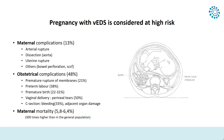For obstetricians and physicians, pregnancy with vascular EDS is a high-risk pregnancy, secondary to important complications at several levels. At the maternal level, the complication rate is 13%, with the most dangerous being arterial rupture, dissections, or gravid uterine rupture. Other complications include bowel perforation at the end of pregnancy or spontaneous carotid sinus fistulas. Obstetrical complications are more linked to delivery and occur in 48% of patients, including premature rupture of membranes and premature labor, leading to premature birth in 22% to 31% of children.